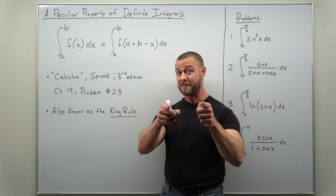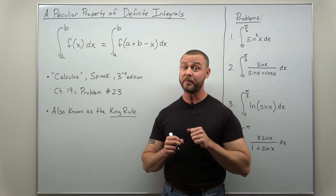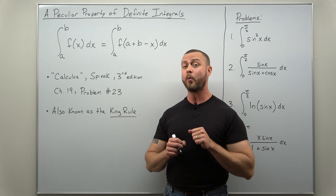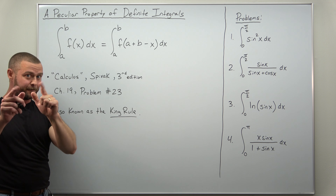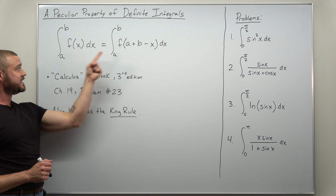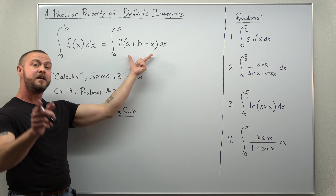Greetings fellow mathematicians and welcome back to the art of integration. We're going to introduce a peculiar property of definite integrals that's extremely useful for evaluating tricky integrals. In this video we're going to go through an introduction to this property, a geometric understanding, a short proof, and then two problems. The property is simple: we have a definite integral from a to b of some function f of x, and we can replace the inside with a plus b minus x — these two integrals are equal. The limits from a to b stay the same, but the inside is different.